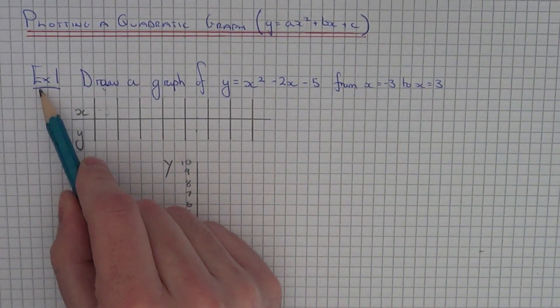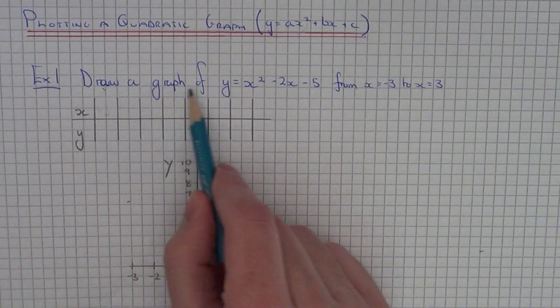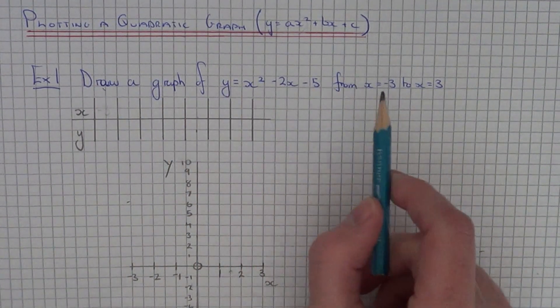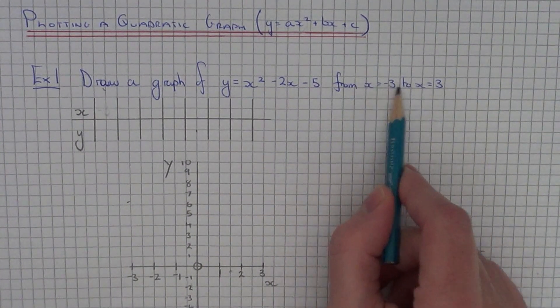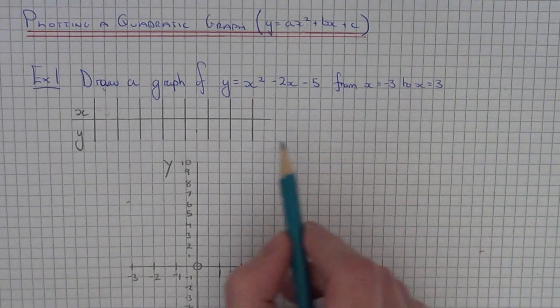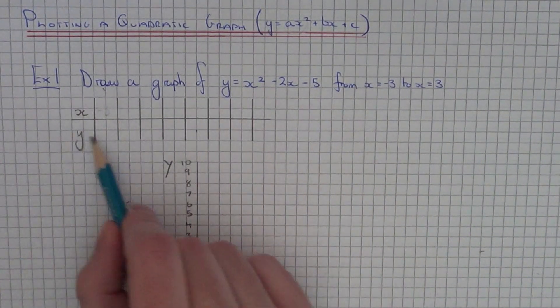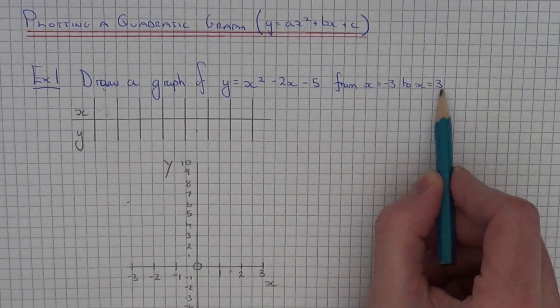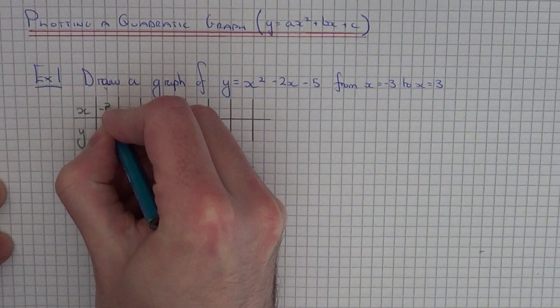So let's have a look at an example. Example 1, draw a graph of y equals x squared minus 2x minus 5. And we've got to do it from x equals minus 3 to x equals 3. So the first thing to do is to draw up a table of values. We need to draw the graph from minus 3 to plus 3. So these are our x coordinates.